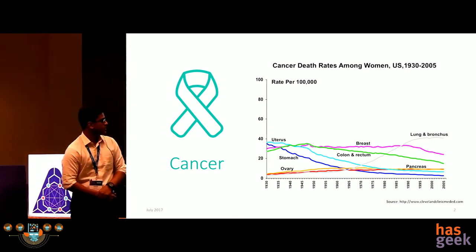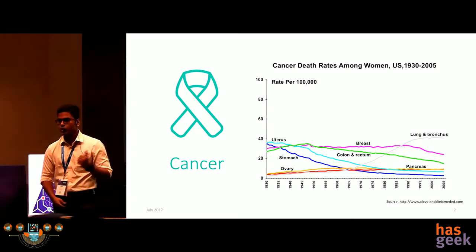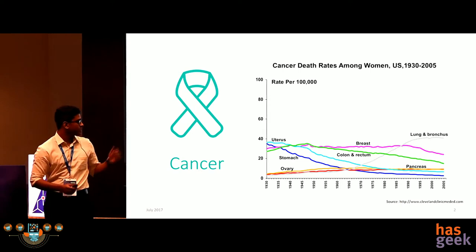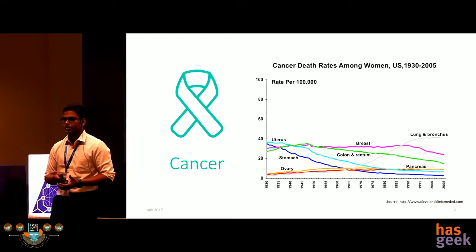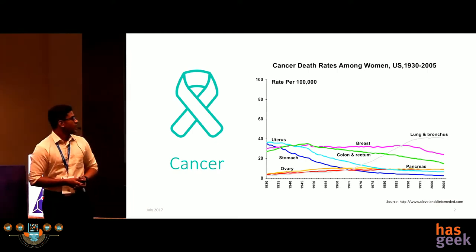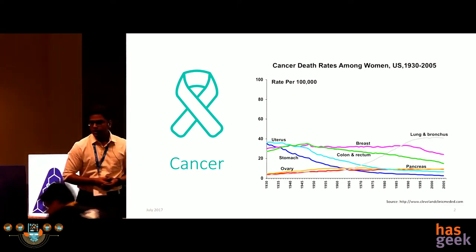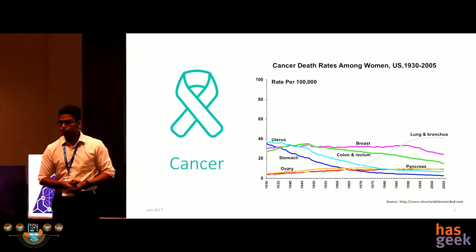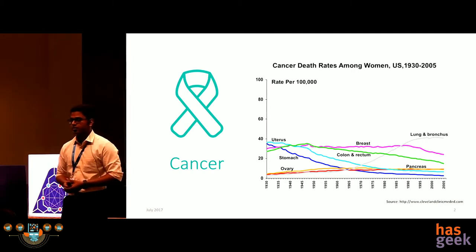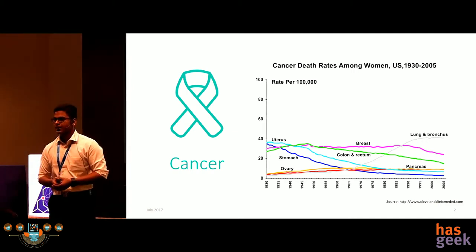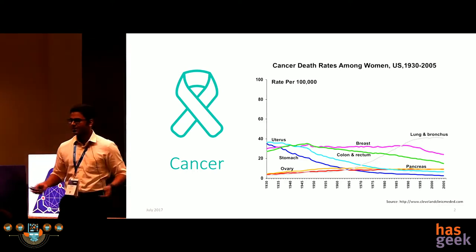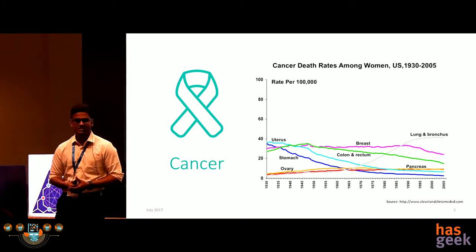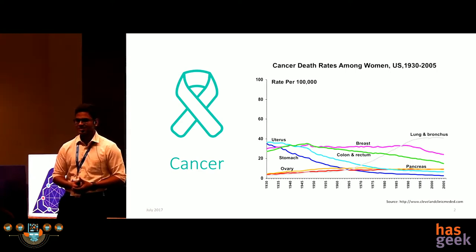There are a couple of trends here. The grey line — lung and bronchus cancer — has been on the rise after 1970, because of the introduction of cigarette smoking. And another interesting trend: the blue line, indicating stomach and colon cancer, has shown a considerable decline. Can anyone guess what major medical innovation caused stomach cancer to decline? It was the fridge.